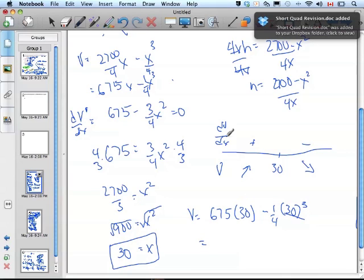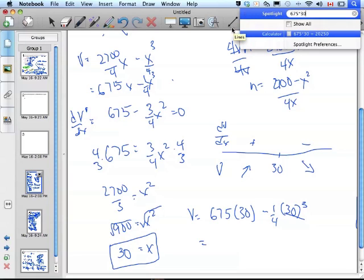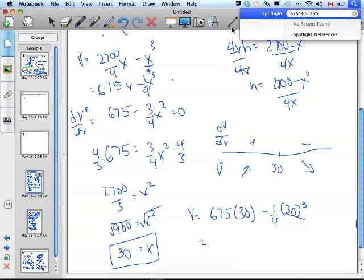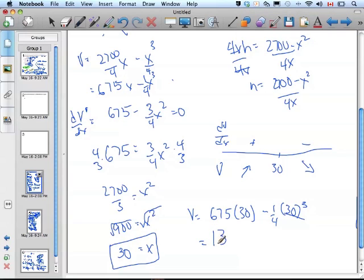If I do my equations on that, I get 675 times 30, minus 0.25, times 30 to the power of 3. It's 13,500 centimeters cubed.